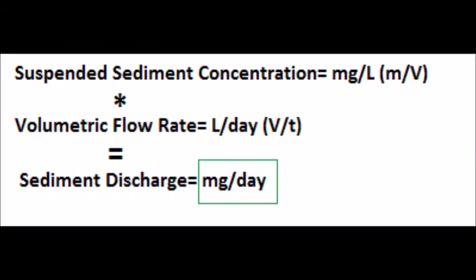Once we take our sediment samples back to the lab, we can evaporate off the remaining fluid and we'll be left with a quantity of sediment measured in milligrams. By doing this, we obtain our suspended sediment concentration in milligrams per liter. If we take the suspended sediment concentration and multiply it by our earlier-derived volumetric flow rate — measured in liters per day — we get a quantity called sediment discharge, which is the milligrams of sediment per day that is being washed down the river.